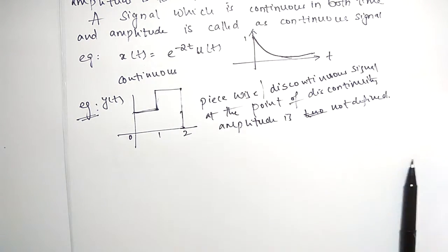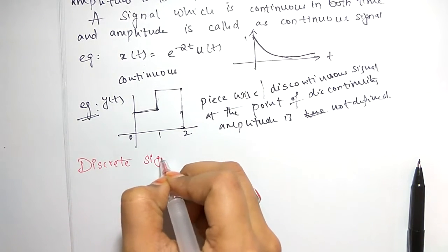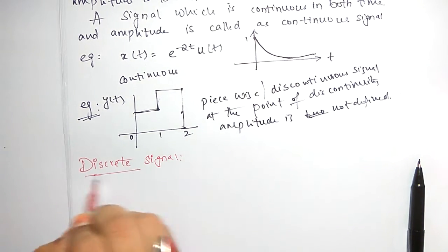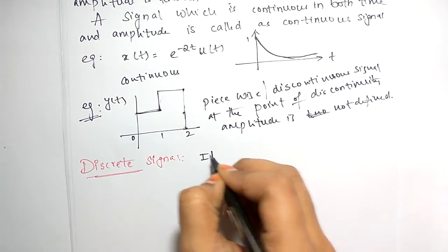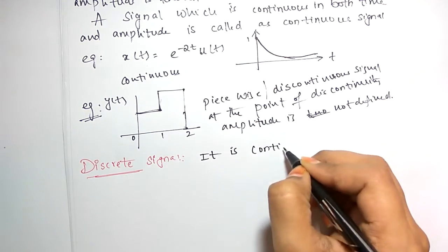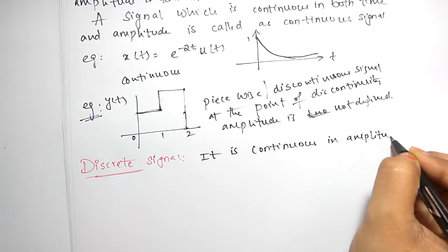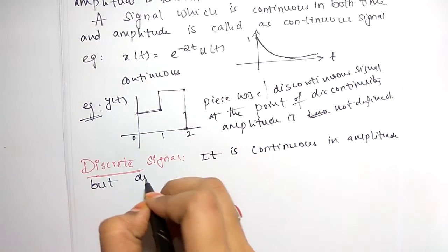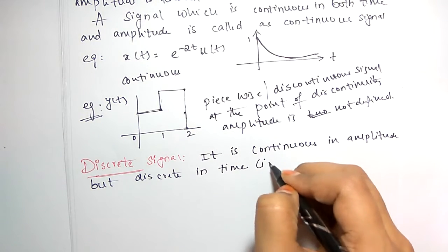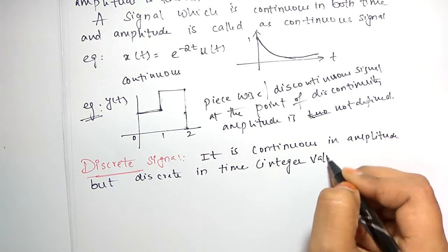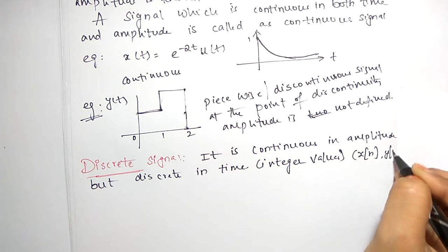Next, coming to the discrete signal. The basic difference between the continuous signal and discrete signal is that the discrete signal is continuous only in amplitude but discrete in time. That means we have time only as integer values, and we represent it as x(n) or y(n) in formulas.